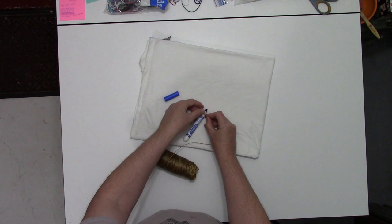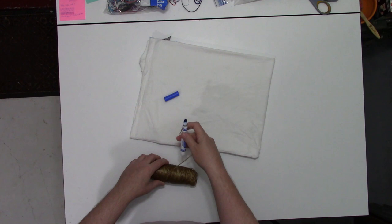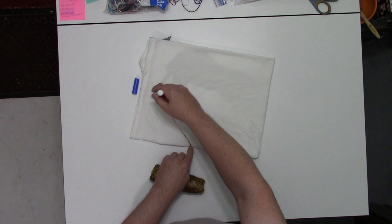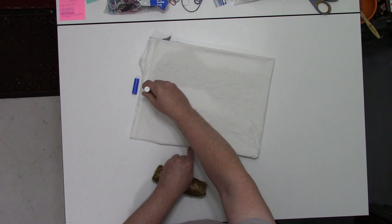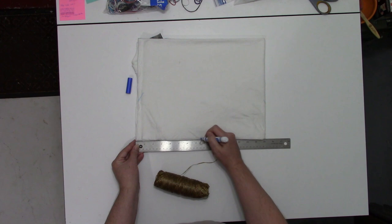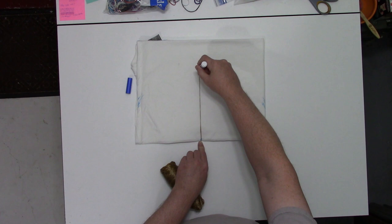To make a circle, just take a piece of sinew or any other kind of string for this. Just tie it on a marker. Find your center point that you want to go with. Fifteen, so it would be seven and a half inches.